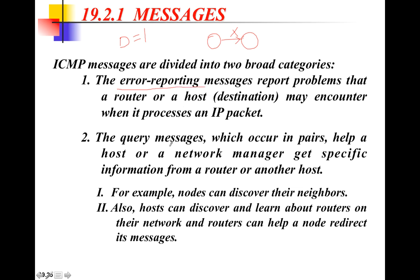The second function is query messages. If you want to get specific information about the network - from a router or from another host - for example, your node can discover the IP addresses of its neighbors. It can also do ping, for example pinging the destination to know if the route is clear or if there is a route to the destination. All these functions belong to ICMP packets and are delivered in the form of ICMP messages.